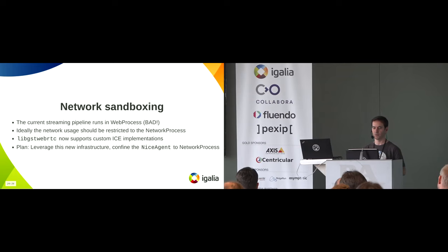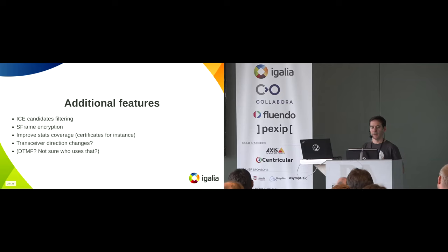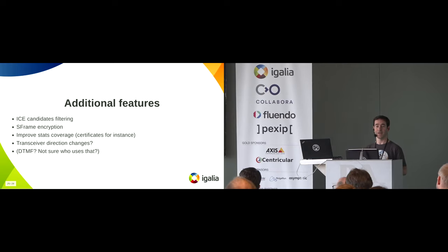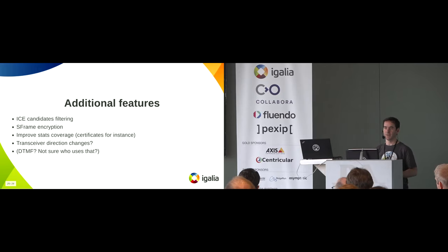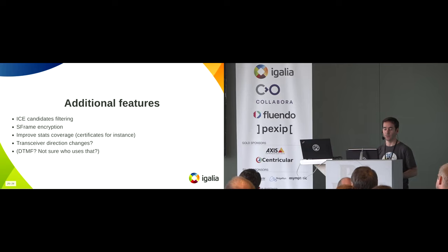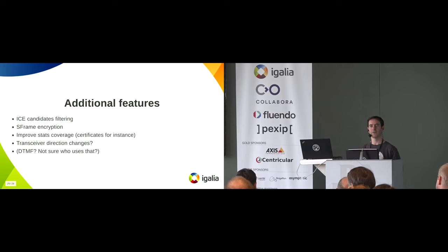There are more features needed for WebRTC, such as ICE candidate filtering and encryption. The stats coverage could also be increased — there are so many things to fill. Also, WebRTCBin doesn't support direction changes yet — perhaps that's something to work on in the future. Then there's another part of the spec called DTMF, which allows sending and receiving telephone pulse events. That's really low priority right now — I don't think anyone is using it — so it's at the bottom of the to-do list.